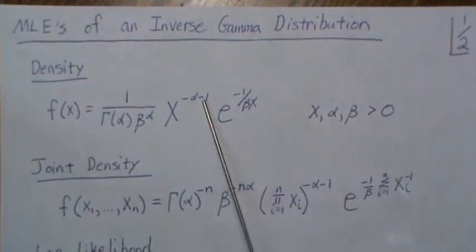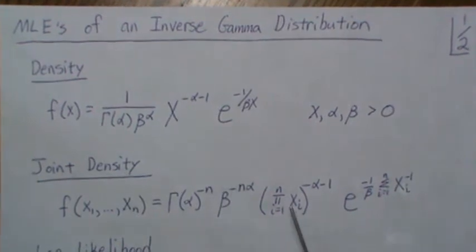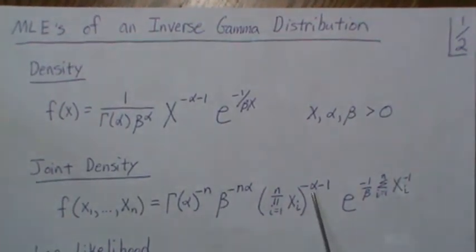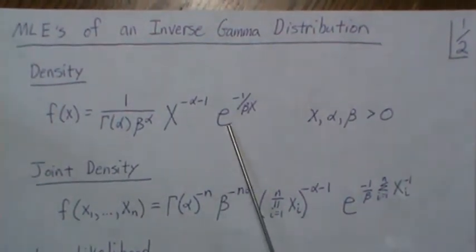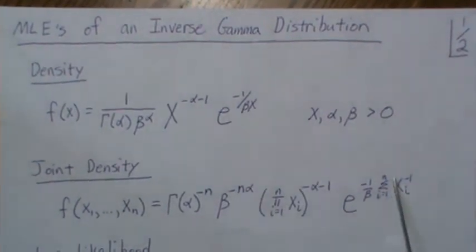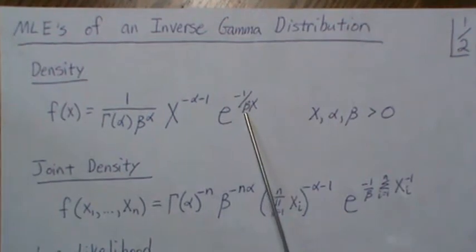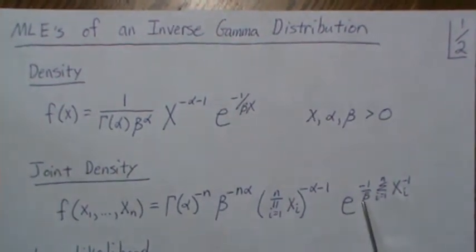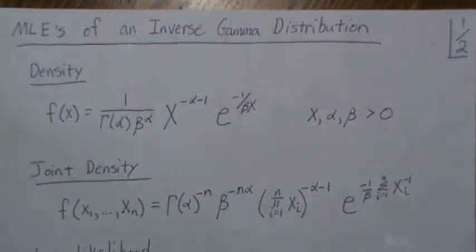Then we get x1 raised to this, x2 raised to this, so that's the product of the x's raised to the same power, and the product of these exponential functions ends up being just the sum, and since there's a 1 over minus 1 over beta constant, we can write it like this.